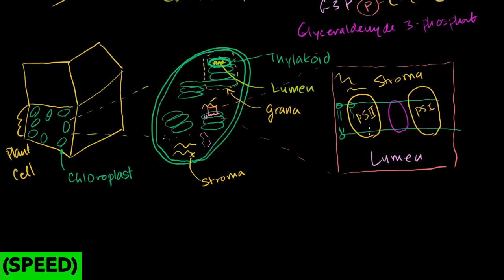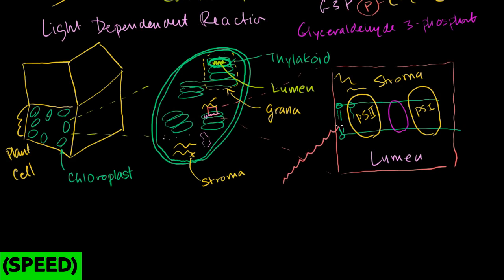The general idea of what happens during the light-dependent reaction is: photons from the sun — having traveled 93 million miles — come in and excite electrons in a chlorophyll molecule in Photosystem II, putting those electrons into a high energy state. As they pass from molecule to molecule, they keep going down in energy state, and as they do, hydrogen protons get pumped into the lumen.